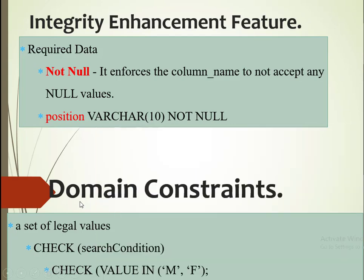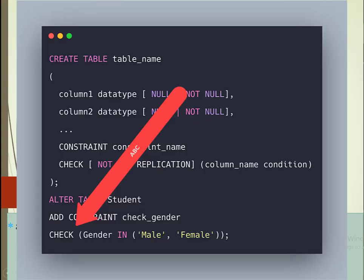There is another category called a domain constraint. This puts a limit onto the type of data that you can populate, and it uses a CHECK condition. For example, you may want to populate the gender, and you only want gender to be populated as either M or F. So in this case, if someone attempts to populate a different value or character — not M or F — it's supposed to throw an error.